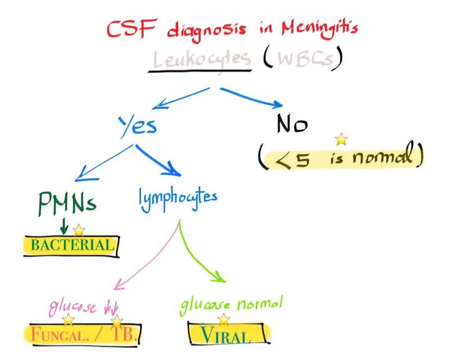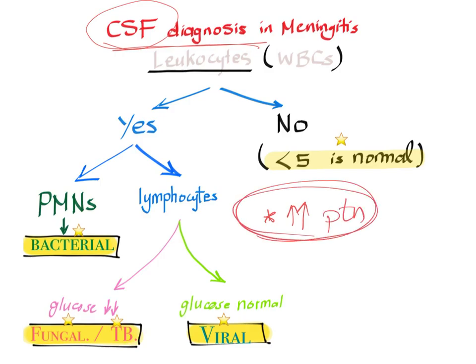How to diagnose meningitis through CSF analysis from the lumbar puncture. When you suspect meningitis, you do a lumbar puncture. First of all, all types of meningitis have high protein in the CSF — period. If the protein is high, meningitis is very likely.